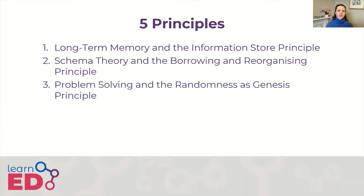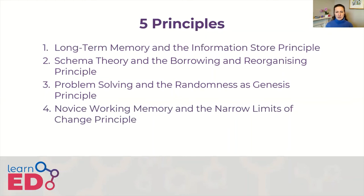Principle four — the narrow limits of change principle: as a consequence of random genesis, no large and fast alterations to memory can be made. This is actually a good thing, because a big sweeping change to a knowledge store might be fatal — imagine a filing cabinet where you're better to add and remove files one at a time than empty the whole lot and try to reorganise it. Working memory is the evolutionary development, Sweller argues, that stops sweeping change and ensures changes to long-term memory are small and incremental. Teaching and learning should therefore take into account that we can only learn slowly, a little at a time.